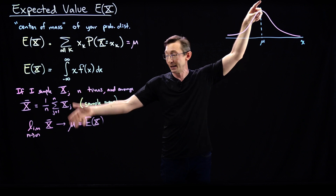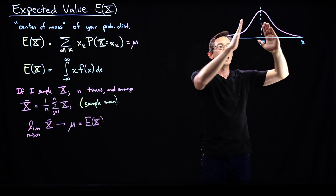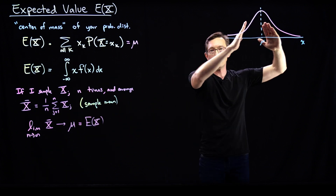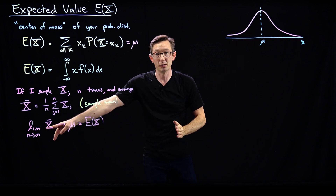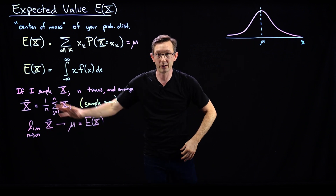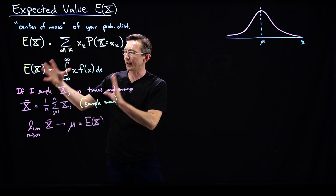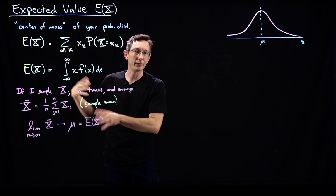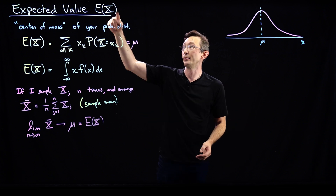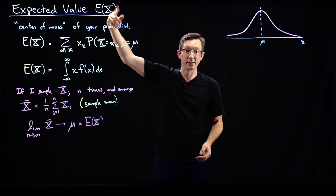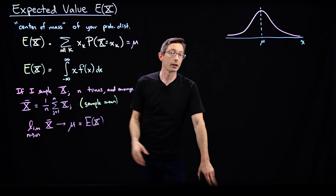The limit as n goes to infinity of x-bar will converge to this expected value, which I'll call mu. This is a really important result — this is the law of large numbers. Essentially it's a statement that if I sample my distribution enough and average that sample, it should converge to the analytic expected value of that distribution. My sample mean should converge to the true mean, and the variance around mu will shrink as n goes to infinity. The expected value is the limit of the average of a bunch of trials of this random variable.